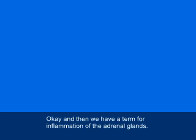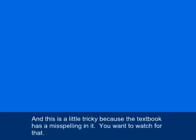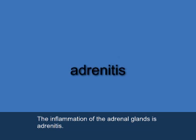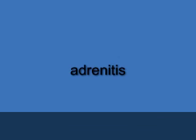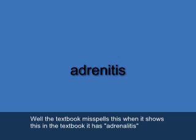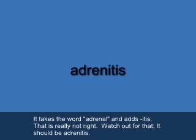The term for inflammation of the adrenal glands is adrenitis (A-D-R-E-N-I-T-I-S). Note that the textbook has a misspelling — it shows 'adrenalitis,' taking the word 'adrenal' and adding 'itis,' but that's not correct. The word part referring to the adrenal glands is 'adreno,' and we add 'itis' to get adrenitis.